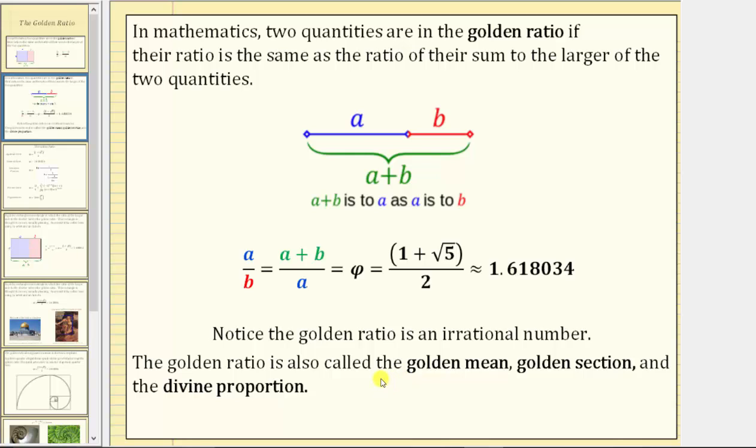The golden ratio is also called the golden mean, golden section, as well as the divine proportion.